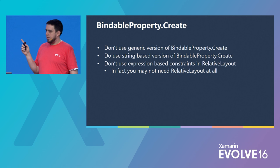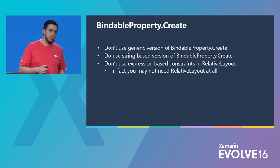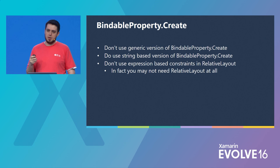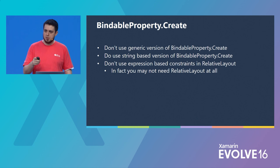With bindable properties, if you're making your own, be sure not to use the generic versions of the create method, especially the ones that use expressions. We were recommending them early on, but it turns out the end result is your iOS app will be inflated by potentially several megabytes. Instead, use the string-based variant and use the C# 6 nameof operator so you get nice, clean refactoring.